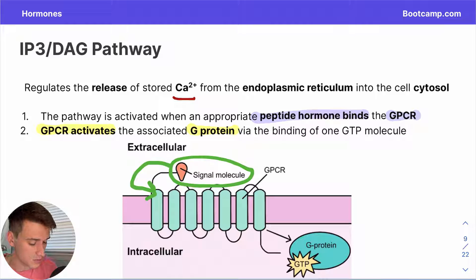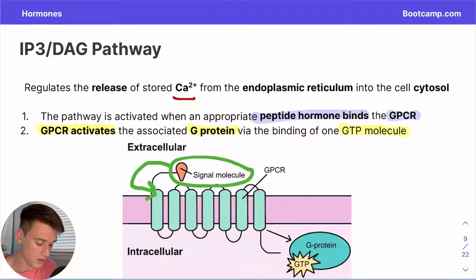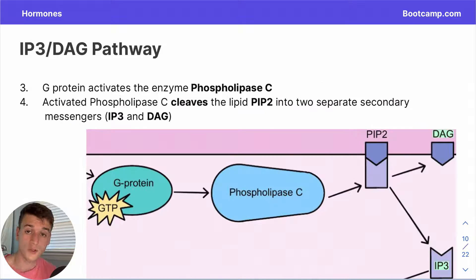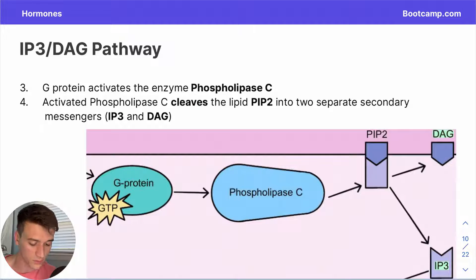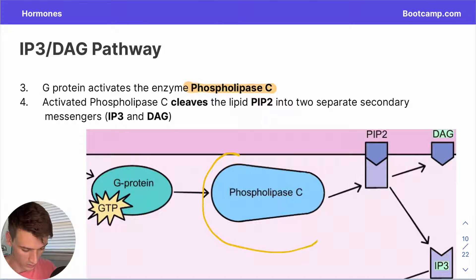This activation occurs by binding one molecule of GTP, a molecule very similar to the high-energy molecule ATP. We can see this in our visual: the signal molecule binds on the outside of the cell, and on the inside this translates to activation of a G protein. For the IP3-DAG pathway, the G protein then activates an enzyme called phospholipase C, which can be found right in the center of our visual.